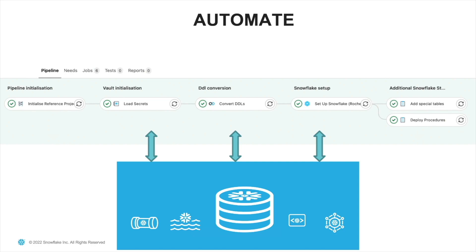Let's cover some of those capabilities at a high level and what they look like in the tool. My plan is to do a follow-up video or two for the technical details — this is a high-level overview to give you a flavor of what DataOps is, what problem it solves, and how it goes about that. This is a pipeline showing how it automates particular activities and tasks. Behind the scenes, DataOps leverages the dbt core engine, so you won't necessarily be writing SQL directly into the IDE — you'll be writing YAML files and Jinja code templates. Here we can see we're initializing the pipeline, converting some DDLs, setting up our Snowflake environment, and deploying some code to that environment.